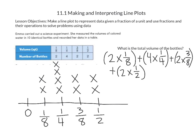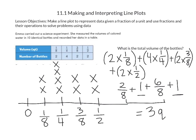We'll multiply each of our fractions and then add those totals up. 2 × 1/8 = 2/8. 4 × 1/4 = 4/4, which equals 1. 2 × 3/8 = 6/8. And 2 × 1/2 = 1. We have one whole and one whole, so two wholes. Then 2/8 + 6/8 = 8/8. Altogether, the total is 3 quarts.